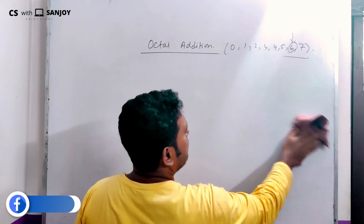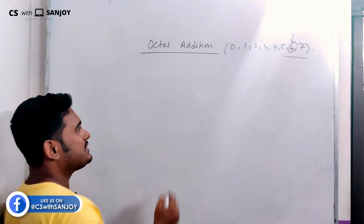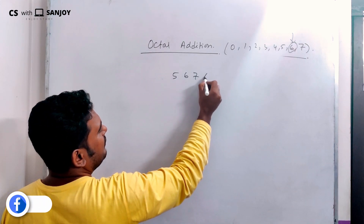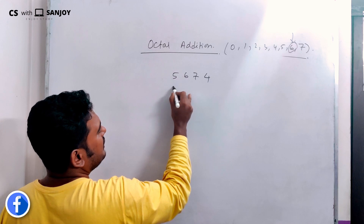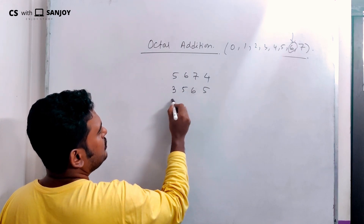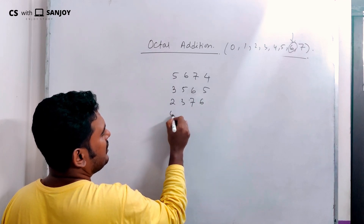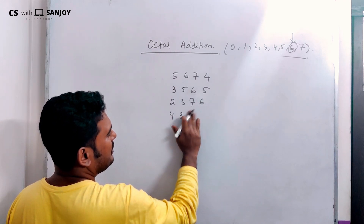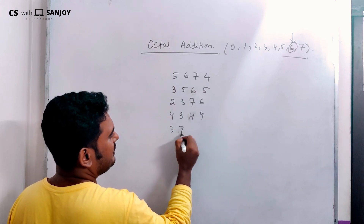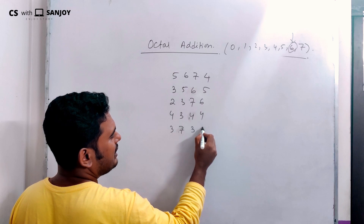Let's take a broader example with larger octal numbers: 567435, 623744, 443, 937, and 36 — these are the octal numbers we will add together.